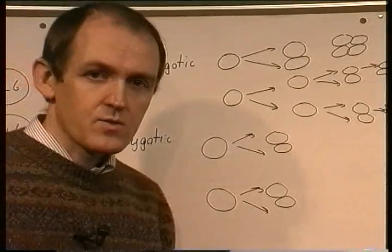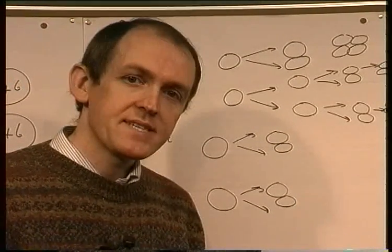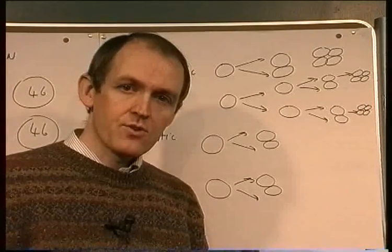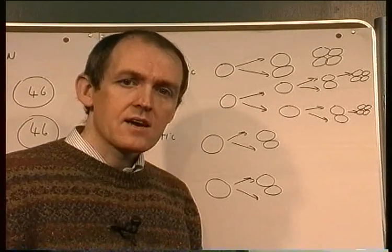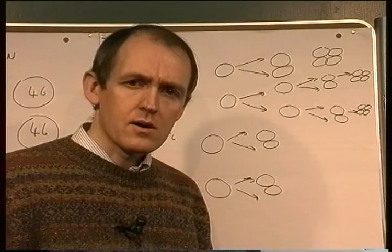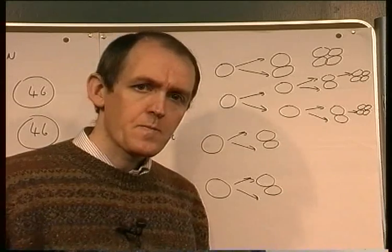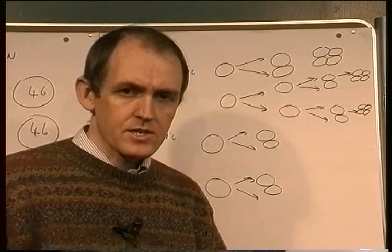So, monozygotic twins share all of the same genetic information, therefore are always of the same sex, and therefore are always identical. Dizygotic twins, though, come from different zygotes and different sperm.